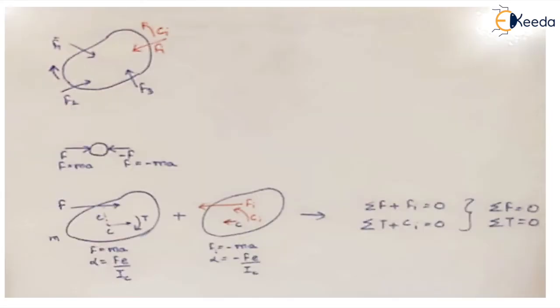Let's assume there is a rigid body under the action of forces — different force members. There can be n number of force members. We have taken three force members F1, F2, and F3, and it is also under the action of an externally applied moment in the clockwise direction.